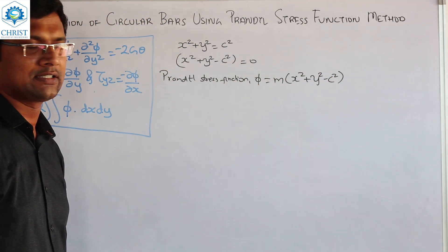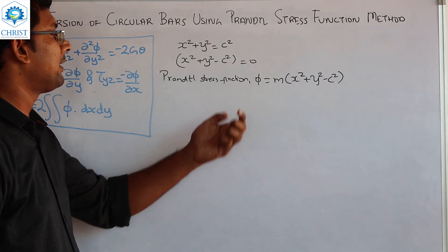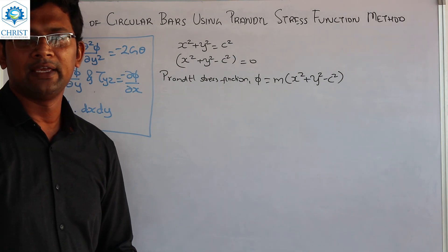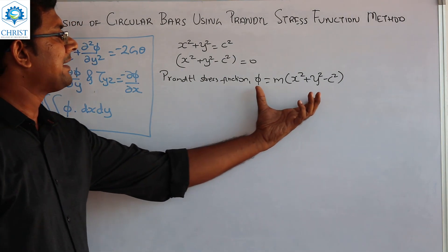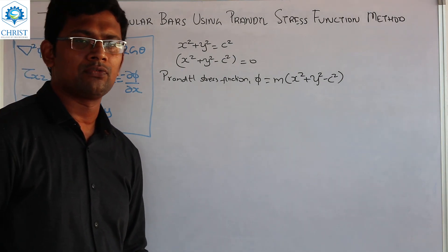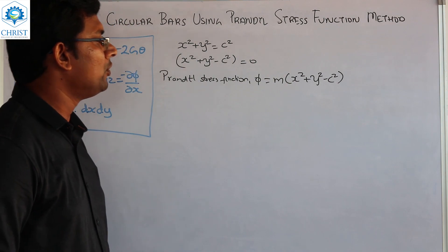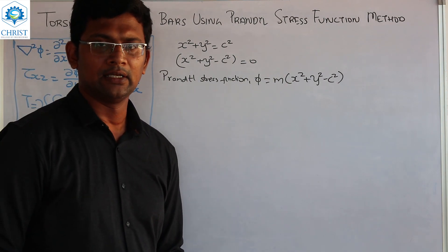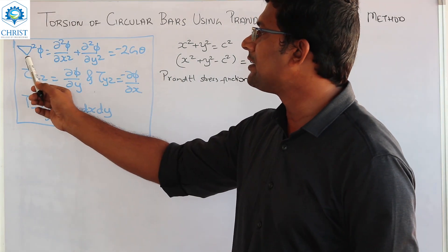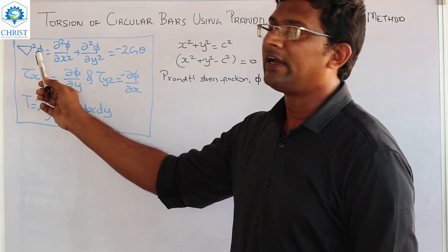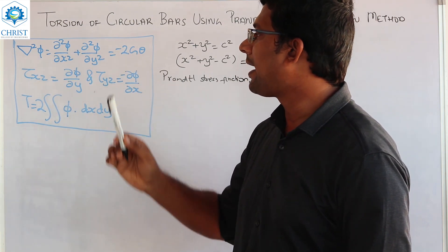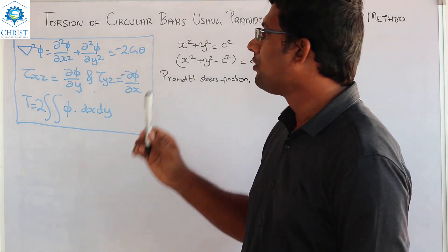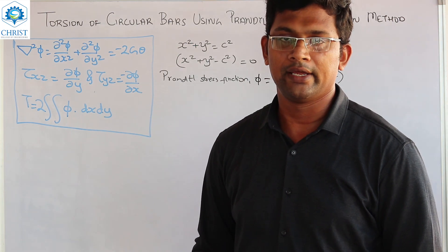Where m is a constant. Now, it is called the Prandtl stress function φ. Let me assume the value: φ is equal to m times (x² + y² − c²). Now, we have del² φ = −2Gθ. Now, we substitute the value of φ.